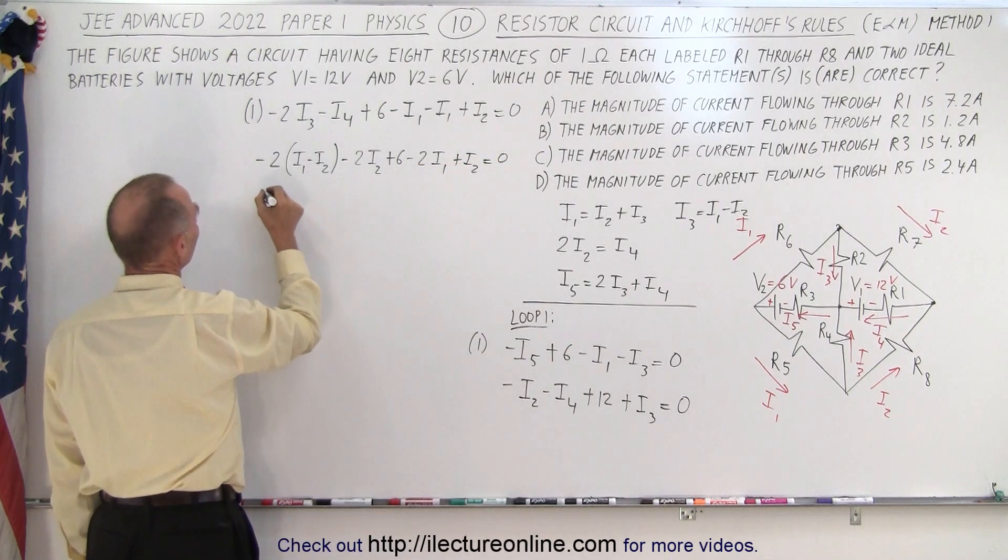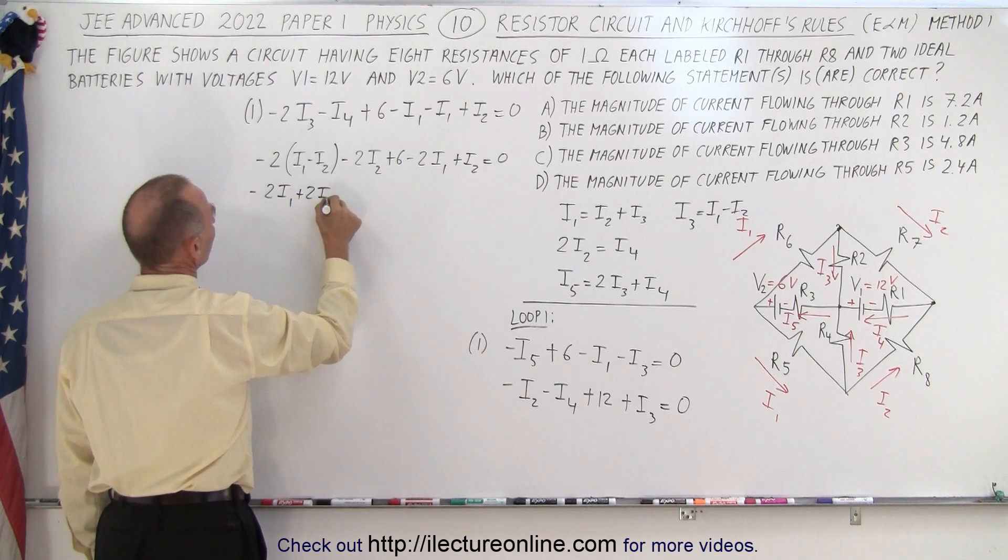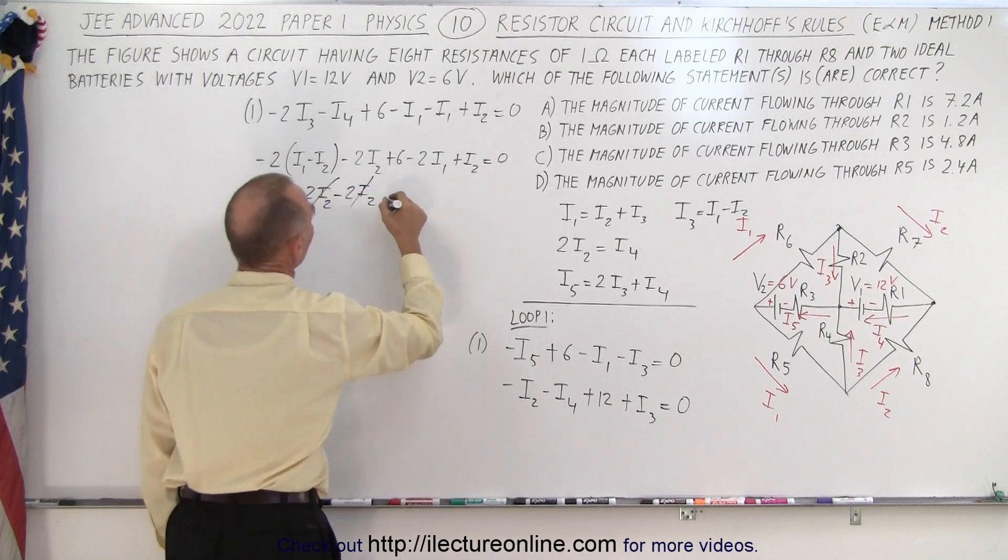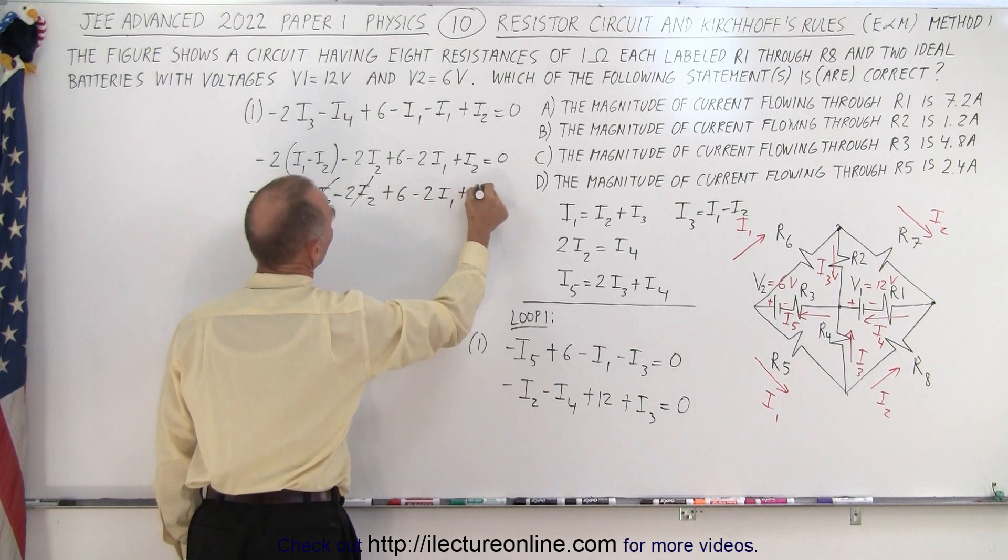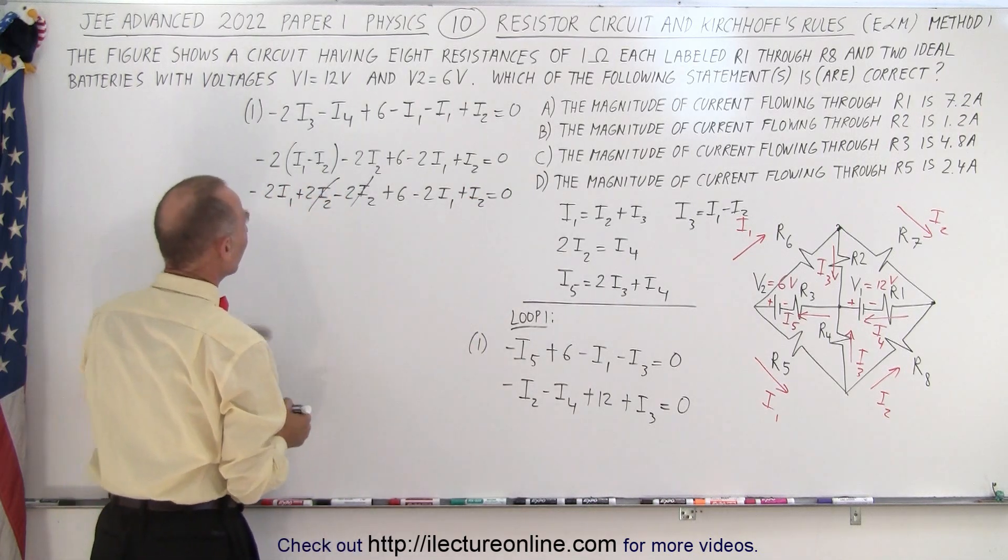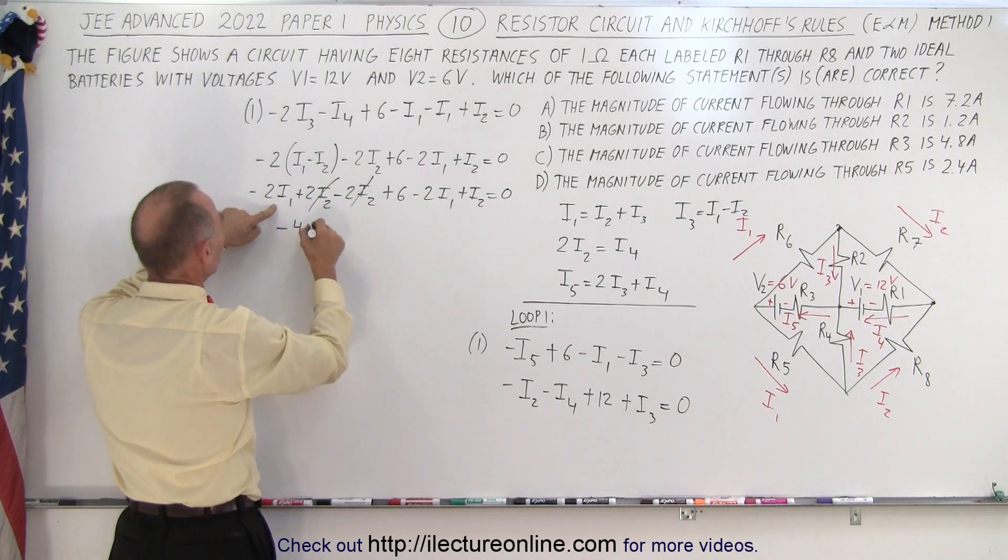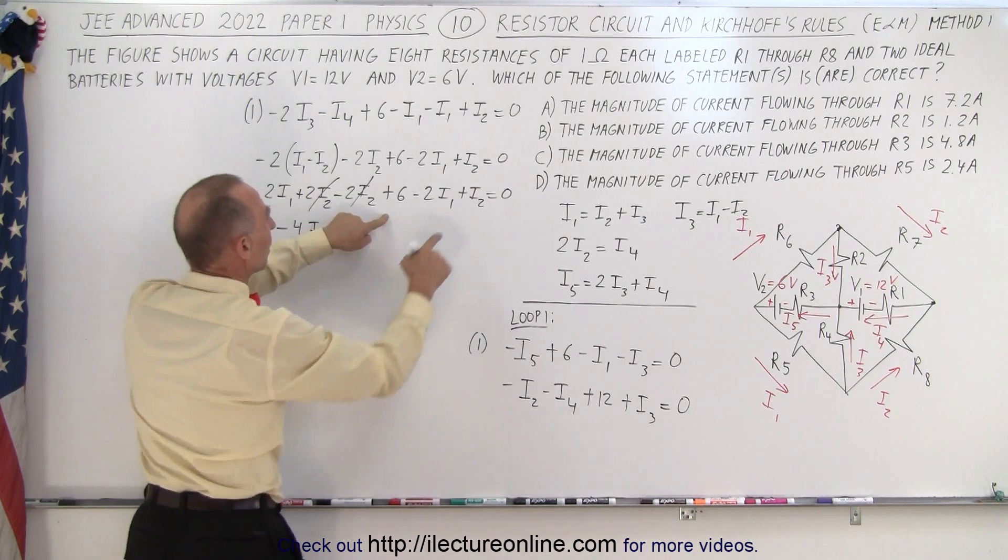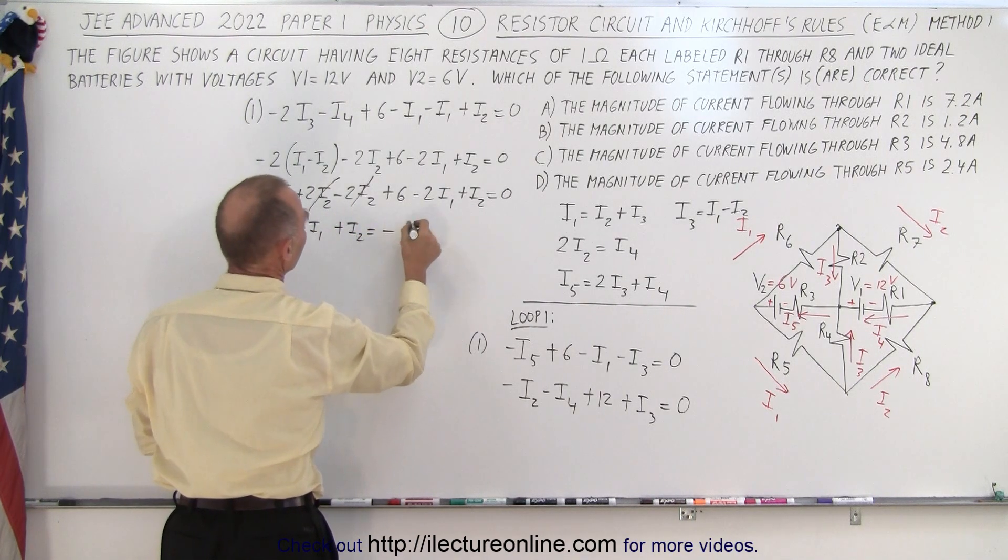So getting rid of parentheses, minus 2I1, plus 2I2, minus 2I2. I guess those two cancel, plus 6, minus 2I1, plus I2, equals 0. And finally we have minus 2I1, minus 2I1, which is minus 4I1, plus I2, equals minus 6.